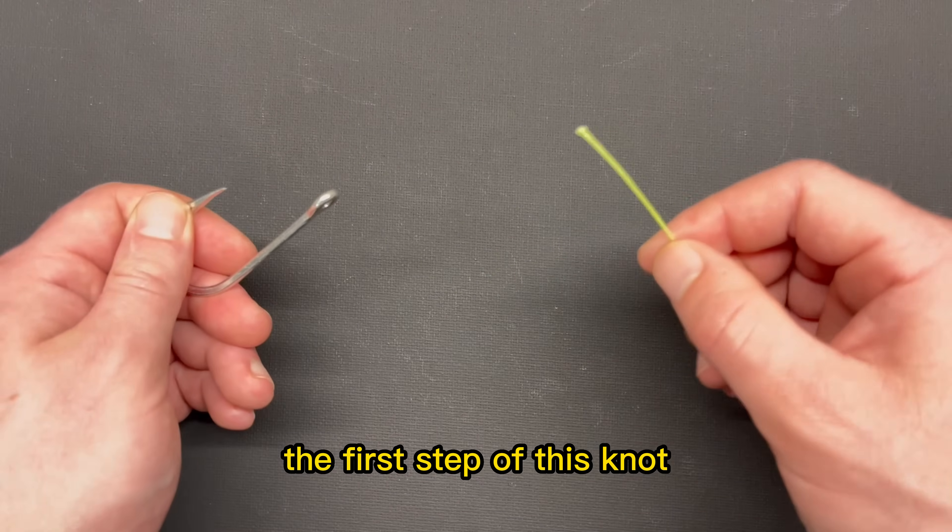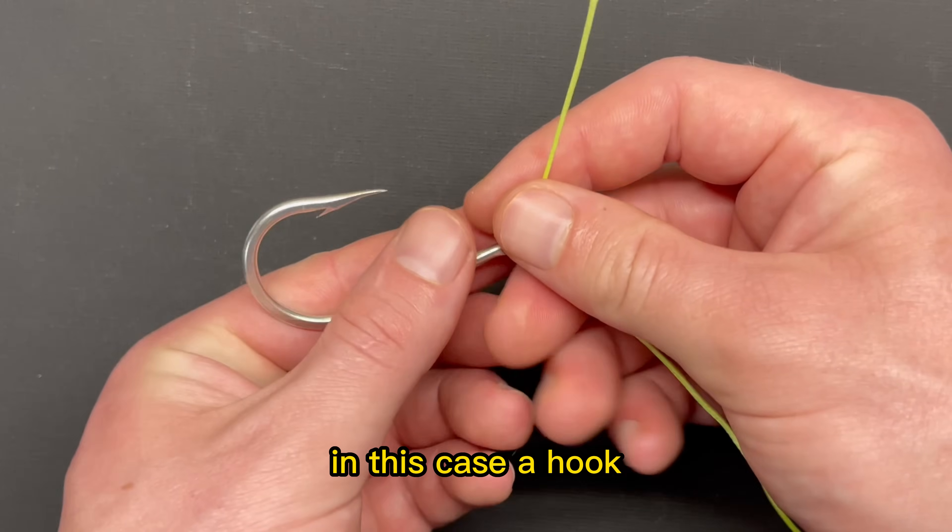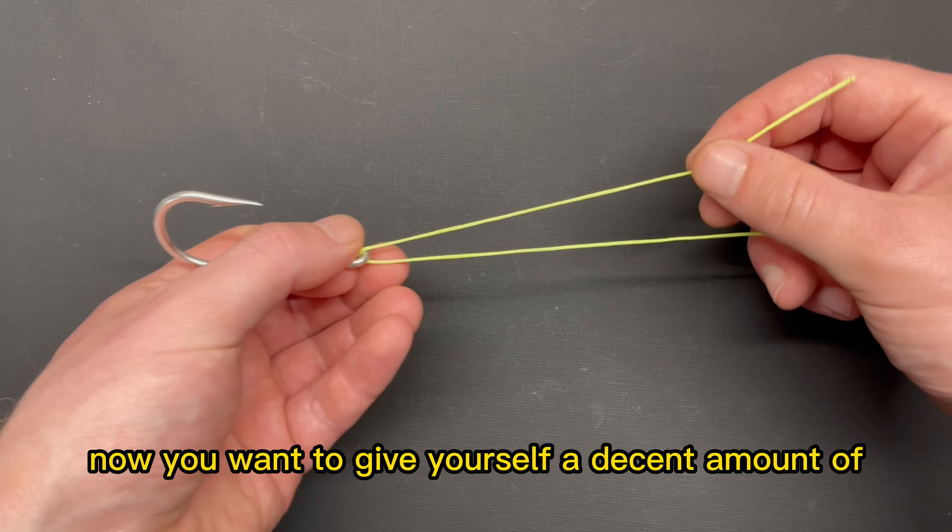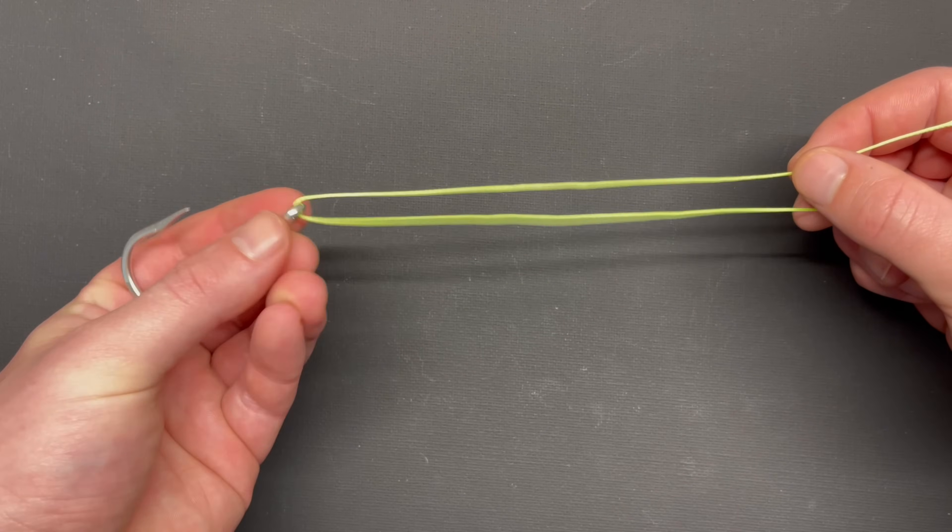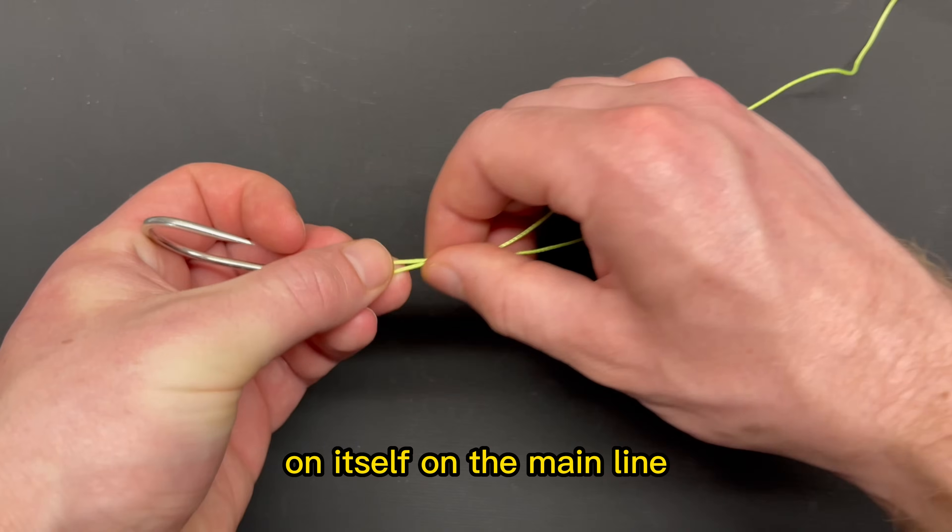Getting right into it, the first step of this knot is running your line through the eye of your tackle, in this case a hook. Now you want to give yourself a decent amount of tag end to work with here, and then you're just going to double it over on itself on the main line.